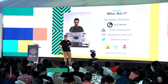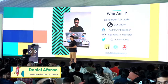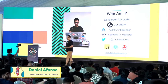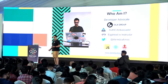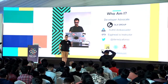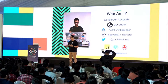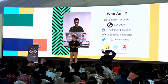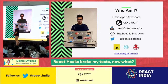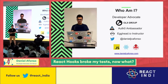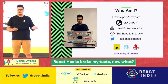My name is Daniel Afonso. I'm working as a developer advocate at Alex Group. I'm an Auth0 ambassador and I'm an Egghead instructor. You can find me on Twitter and pretty much any social network at the handle DanielJC Afonso. The main ecosystem I've been interested in the last couple of years has been React, JavaScript, and the Testing Library.